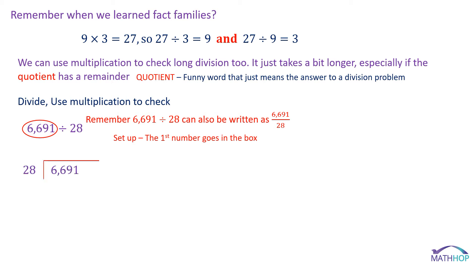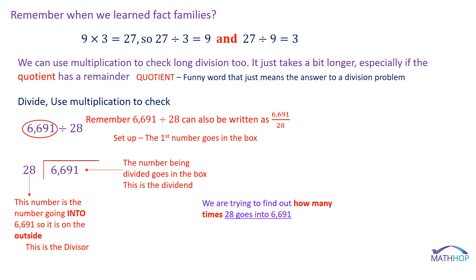So let's just learn some formal words that you're going to hear in class. The number being divided, that goes in the box. That's called the dividend. The number that is going into that number in the box, that's 6,691, it goes on the outside. 28, we want to see how many times 28 goes into 6,691. So it's going into that number. So it's on the outside and we call that the divisor. So what we're trying to do is find out how many times 28 goes into 6,691, or basically how many groups of 28 can be made from 6,691 things.